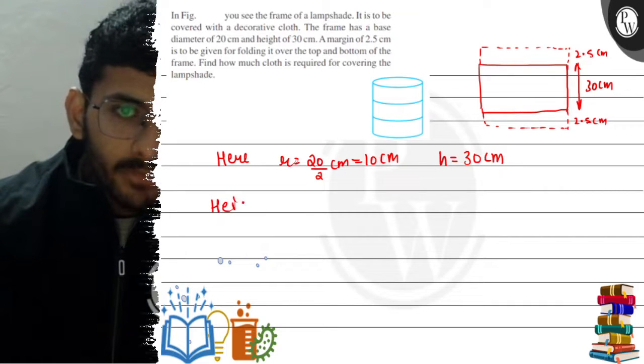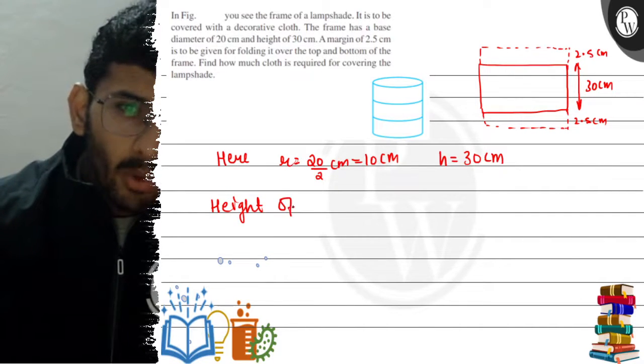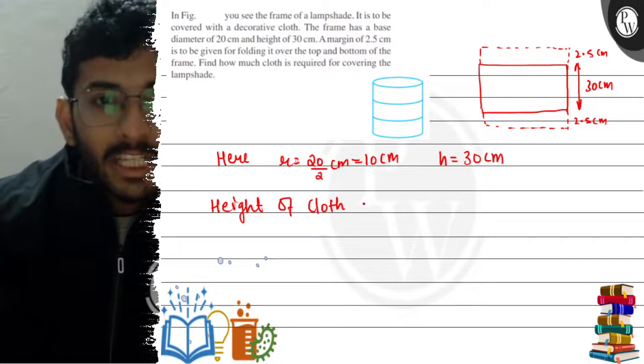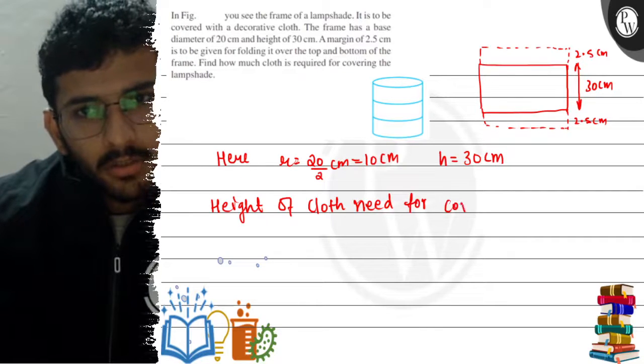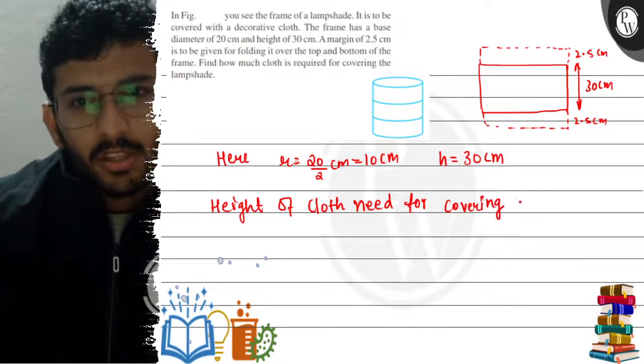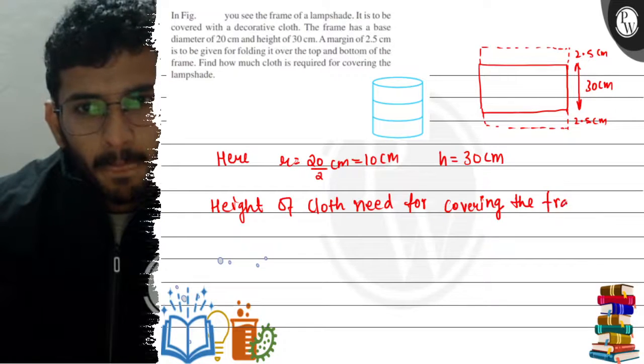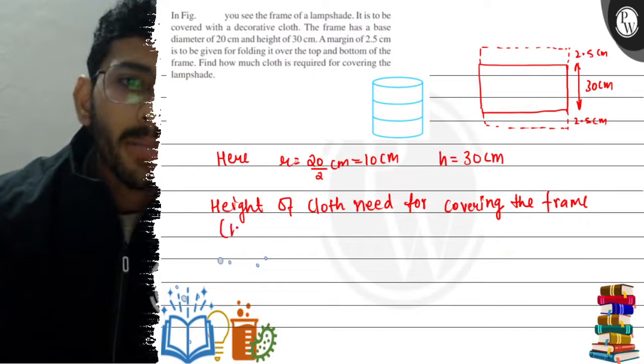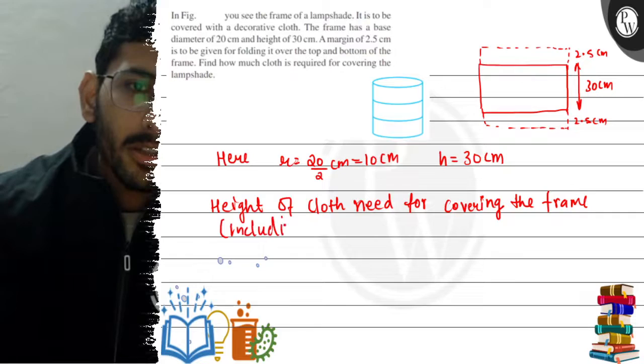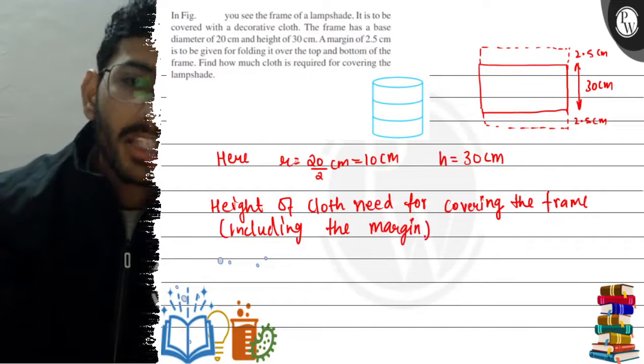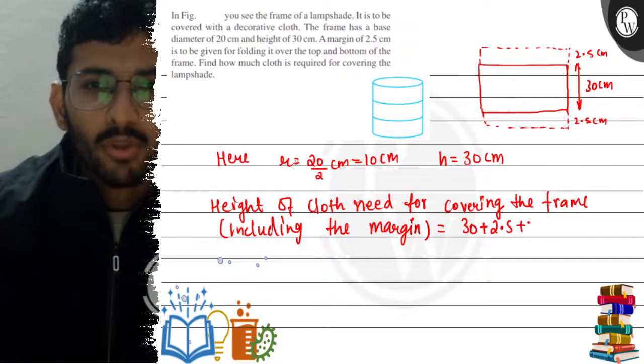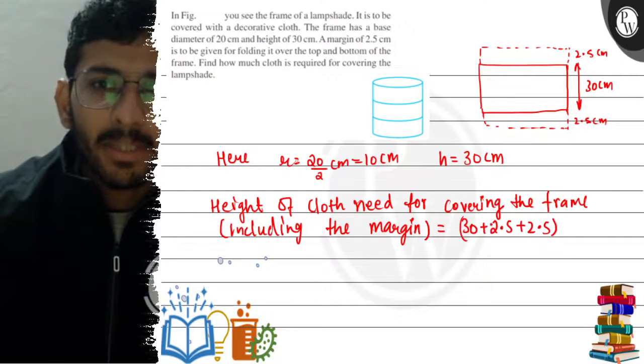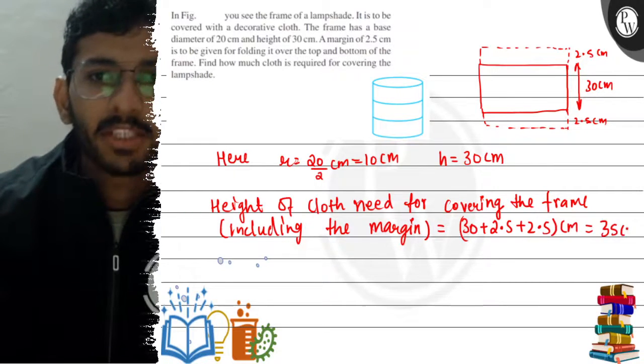The height of cloth needed for covering the frame, including the margin—if we add the height, it will be 30 plus 2.5 plus 2.5 centimeters, which is 35 centimeters. I hope this is clear.